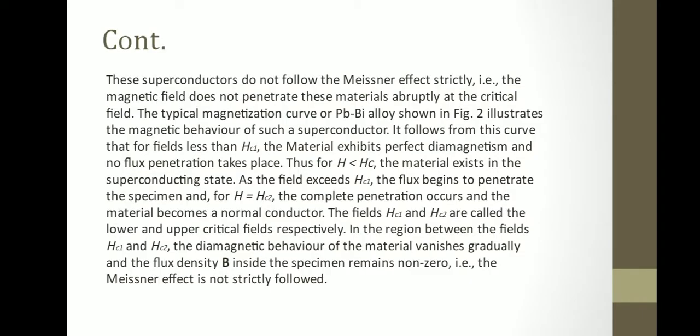These superconductors do not follow the Meissner effect strictly, that is, the magnetic field does not penetrate these materials abruptly at the critical field. The typical magnetization curve of a lead-bismuth alloy shown in Figure 2 illustrates the magnetic behavior of such a superconductor. It follows from this curve that for fields less than Hc1, the material exhibits perfect diamagnetism and no flux penetration takes place. Thus for H smaller than Hc1, the material exists in the superconducting state. As the field exceeds Hc1, the flux begins to penetrate the specimen, and for H equal to Hc2, complete penetration occurs and the material becomes a normal conductor.